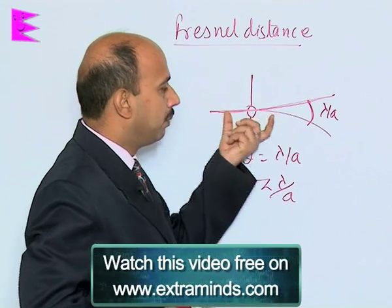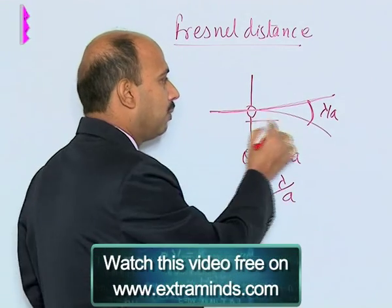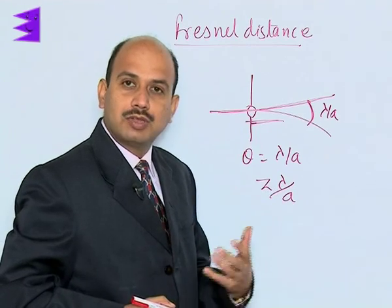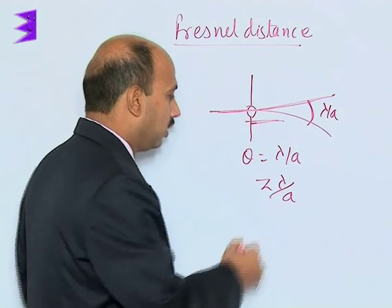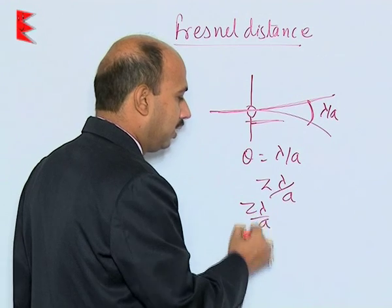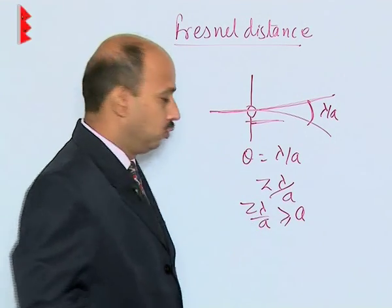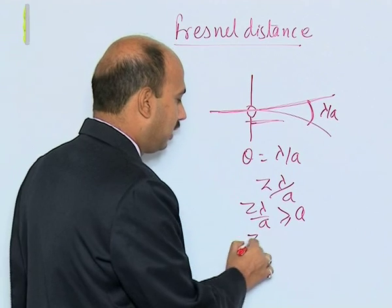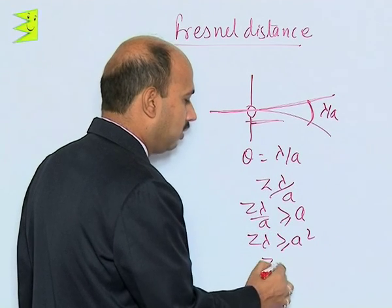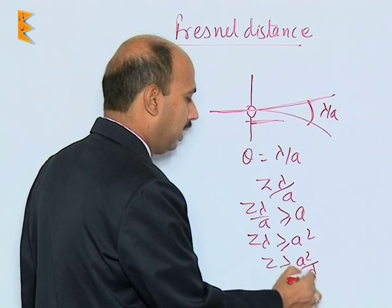This spreading of the beam becomes much more significant when z times lambda by a is greater than or equal to a, where z is the distance travelled. So we can write z times lambda is greater than or equal to a squared, which gives z is greater than or equal to a squared by lambda.